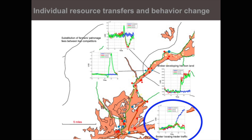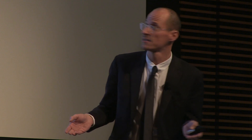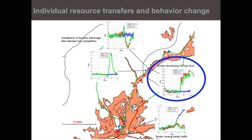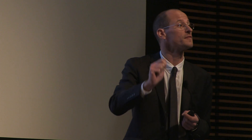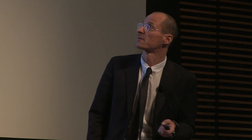Another power broker on the lower right just lost a lot of traffic because the new road is diverting traffic away from where he lives, giving him less income. Another power broker on the top right has more income and therefore starts developing land — this will feed back into macro-level dynamics.